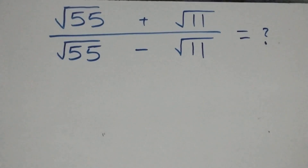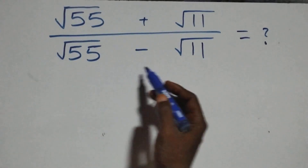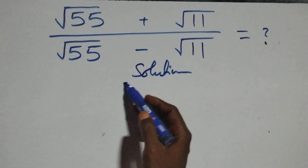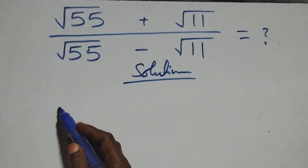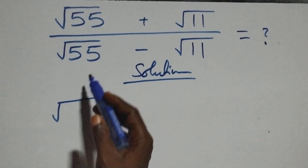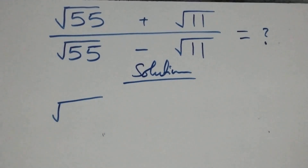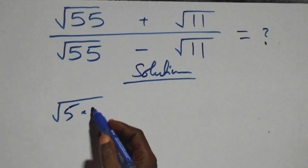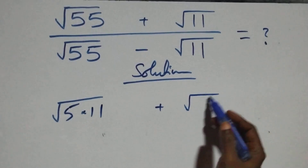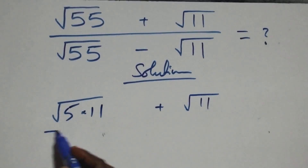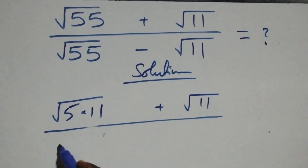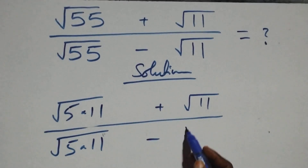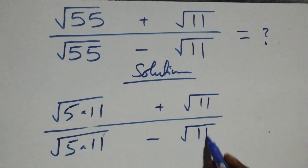Hello, you are welcome. How to solve this nice problem. From what we have here, we can write: fifty-five of root five times eleven, then plus root eleven, then divided by root five times eleven minus root eleven.